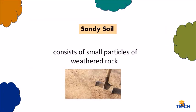Your first type of soil is the sandy soil. This consists of small particles of weathered rock. It is one of the poorest types of soil for growing plants because it has very low nutrients and is poor in holding water, which makes it hard for the plants' roots to absorb water at all.